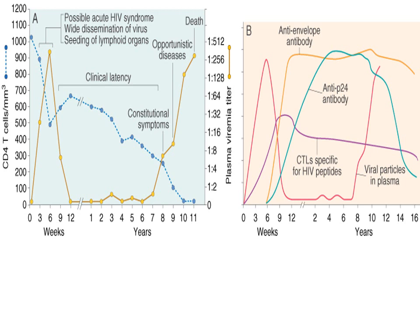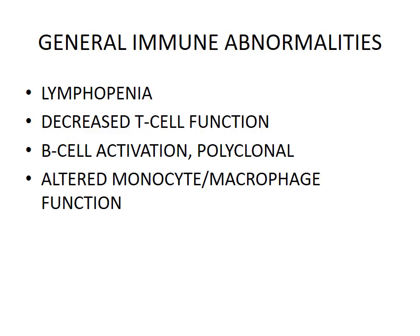This flowchart again shows: first there is viremia after HIV infection and seeding of lymphoid organs, leading to a latent symptom-free period of approximately seven years. Then there is opportunistic disease, including opportunistic infections, lymphomas, and tumors as a result of the immunocompromised state of the patient, leading to death.